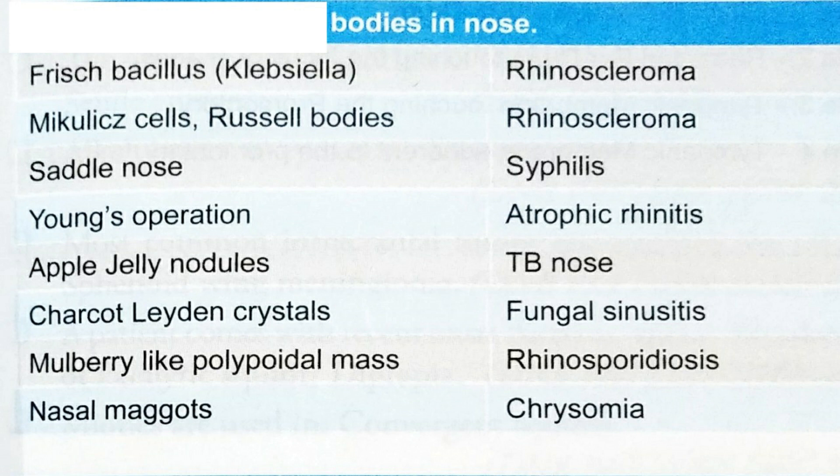Apple jelly nodules are related with tuberculosis of the nose. Charcot-Leiden crystals are related with fungal sinusitis. Mulberry-like polypoidal mass is related with rhinosporidiosis. Nasal maggots are related with Chrysomia.